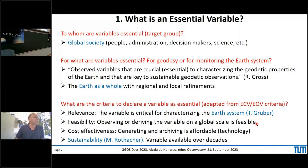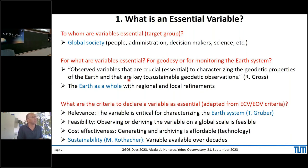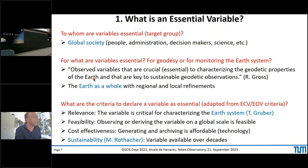For what are variables essential? This is a continuation of the previous question — for geodesy, or for monitoring the earth system? I took this well-known sentence by Richard, cited quite often, which is still a valid statement. One item says 'characterizing the geodetic properties of the earth,' and geodesy and earth are closely linked. So we describe properties of the earth — that is a key word. Therefore: the earth as a whole, but maybe with regional and local refinements.